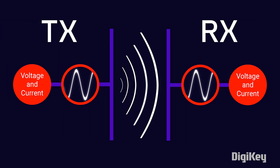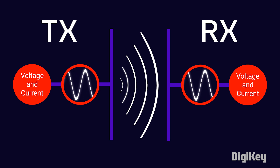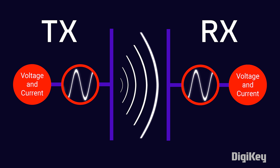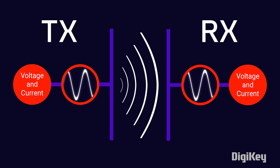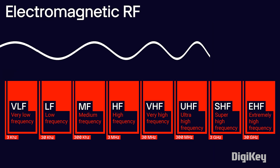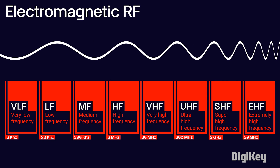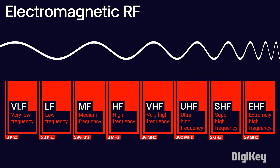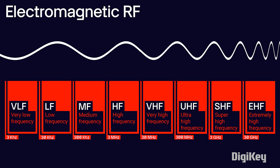Antennas are used to receive and transmit radio signals by converting radio waves into current and voltage, or vice versa. Radio waves are a subcategory of electromagnetic waves defined by the frequency of the wave.